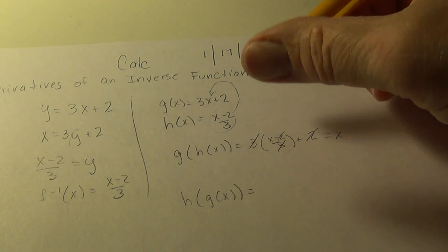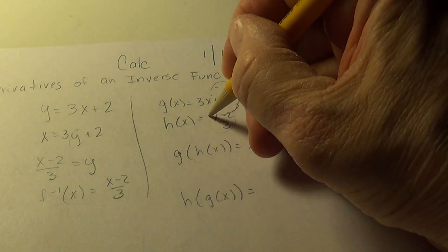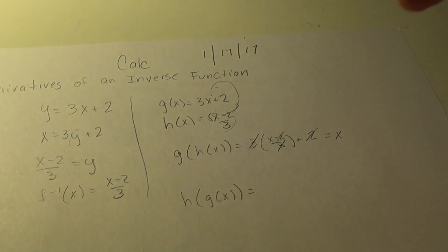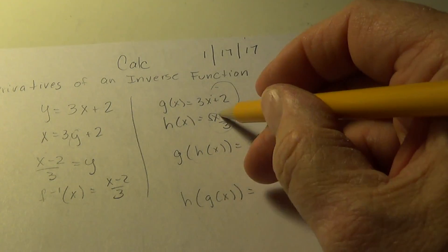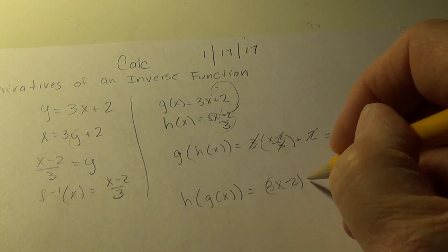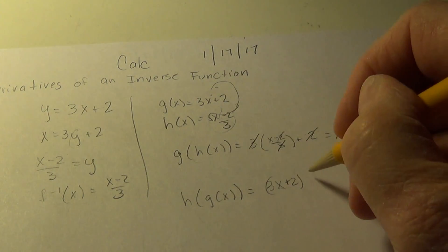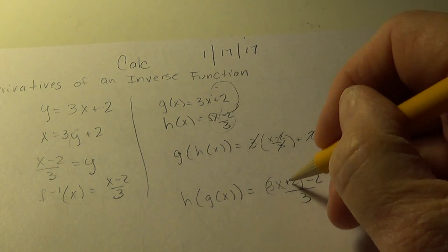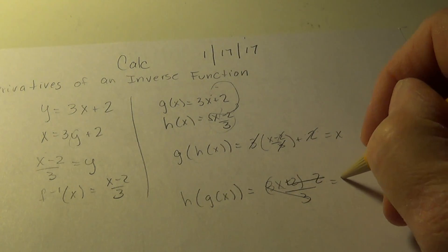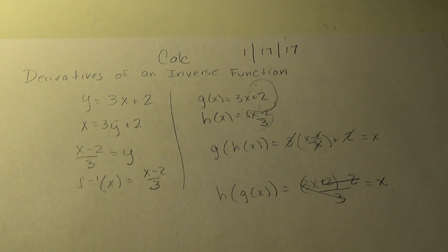Then we go the other way. We're going to take this function and throw it in here. So we're going to have, instead of x, 3x plus 2 minus 2 over 3. The minus 2's, the 3's, we do get x both ways. So we learned that about inverse functions.